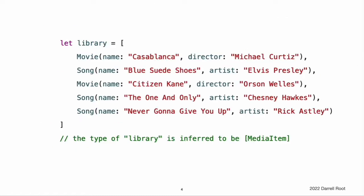The final snippet creates a constant array called library, which contains two movie instances and three song instances. The type of the library array is inferred by initializing it with the contents of an array literal. Swift's type checker is able to deduce that Movie and Song have a common superclass of MediaItem, and so it infers a type of array of MediaItem for the library array. The items stored in library are still Movie and Song instances behind the scenes. However, if you iterate over the contents of this array, the items you receive back are typed as MediaItem and not as Movie or Song. In order to work with them as their native type, you need to check their type or downcast them to a different type as described later.